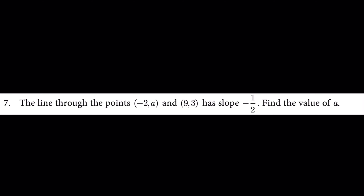Question number 7: The line through the points (minus 2, A) and (9, 3) has slope minus 1 by 2. Find the value of A.